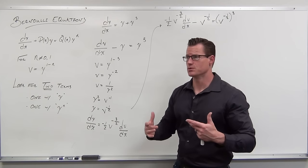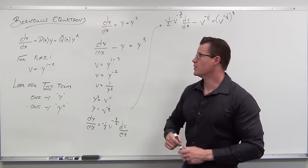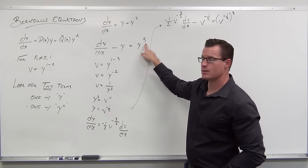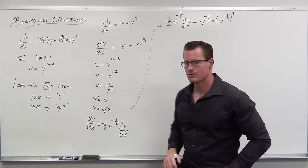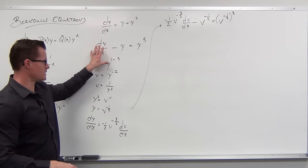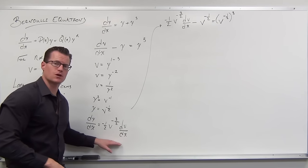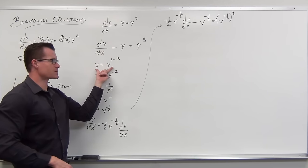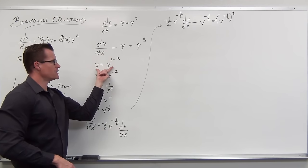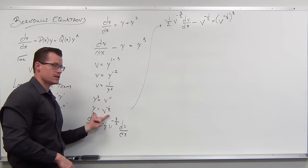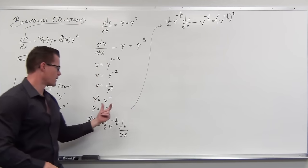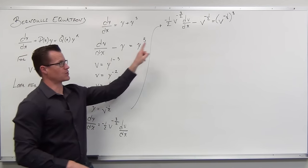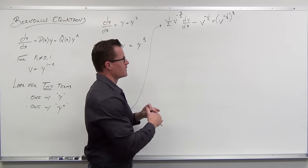So the whole idea of a Bernoulli equation: make it look linear as much as you can, do a substitution with y to the one minus that power, solve it for y, replace your y with what you solved for, replace your dy/dx with what the derivative is — and that's going to finish creating this linear for us. We've looked at it and said y to the first, y to not the first. Take v equals one minus that number, solve for y, take a derivative, and make the substitution.